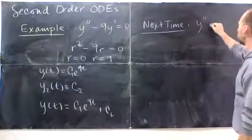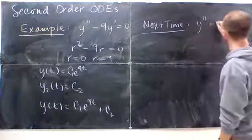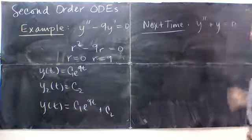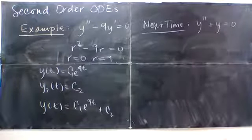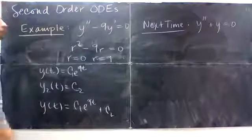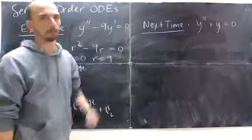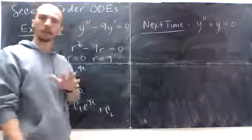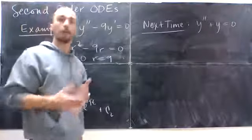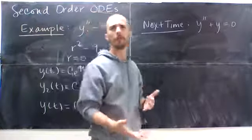I want to talk about y double prime plus y equals 0. Now this is interesting. This is one that if we looked at the characteristic polynomial, we were not going to be getting real numbers. And so we're not going to really deal with that today. But I will just tell you, solutions to this differential equation if you just think about it hard enough.